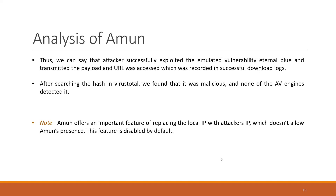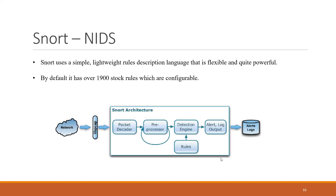I would like to make a note here: Amun offers an important feature of replacing the local IP with the attacker's IP, which doesn't reveal the presence of Amun. However, this feature was disabled by default — I realized this later. Had I known earlier, I would have made changes to the Amun configuration file so we could have collected more similar events.